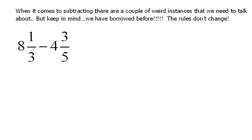Here we have our problem: 8 1/3 minus 4 3/5. I'm going to write it vertically because it's easier to deal with. First things first, we need a common denominator. The common denominator in this case would be 15. We've already worked with 3 and 5 quite a bit, so we multiply 3 times 5.